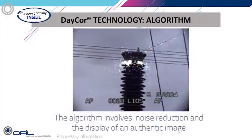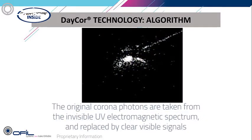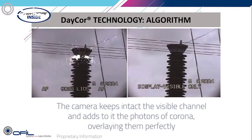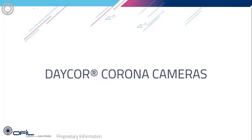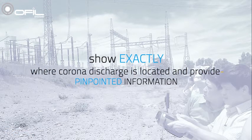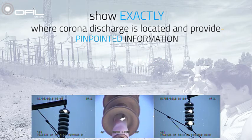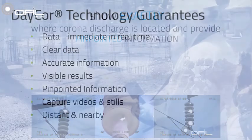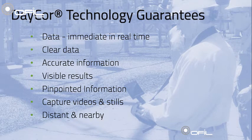The camera leads inspectors to suspected faulty locations. The original discharge is taken from the invisible electromagnetic spectrum and replaced by clear visible signals superimposed on the original visible image, with the origin clearly shown. The process is instantaneous without any noticeable delay. DayCor cameras are optimized for detecting corona radiation during daytime, ensuring reliable results and essential information for predictive maintenance of electrical apparatus, with no lagging or delay.